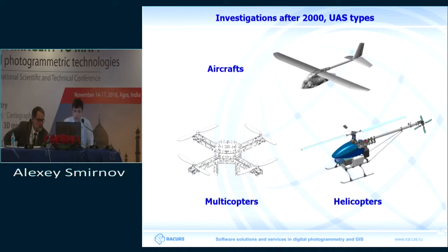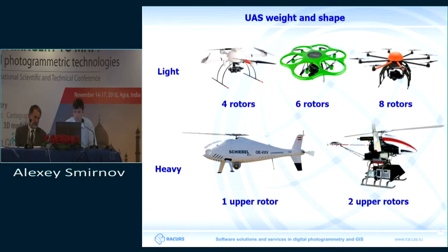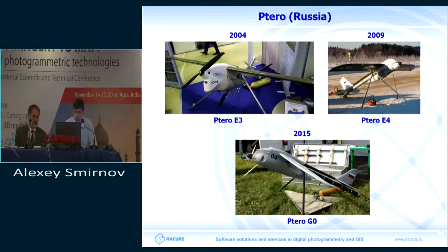The modern UAV world is represented by fixed-wing aircraft, helicopters, and multi-copters. The main features providing insights into the performance of UAVs are weight, size, and shape — these tell you what kind of equipment a UAV will be able to lift and carry, and how easy or difficult it will be to use a given camera on a particular UAV. I'll show you how these models developed from their initial date of sale.